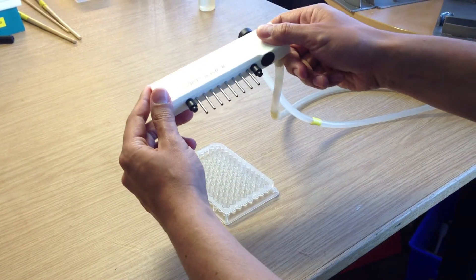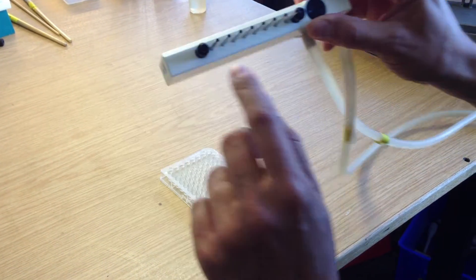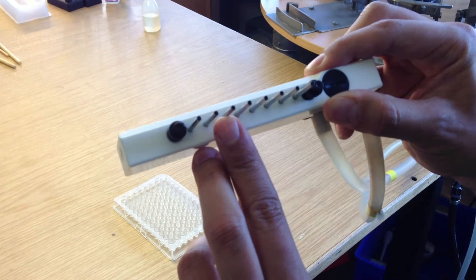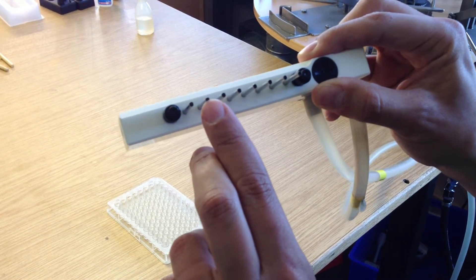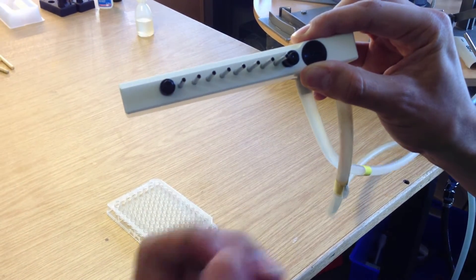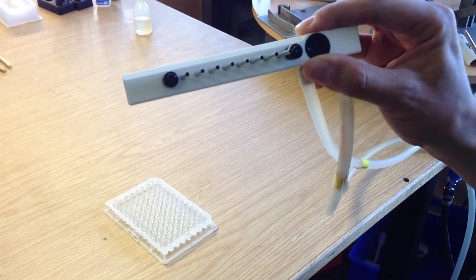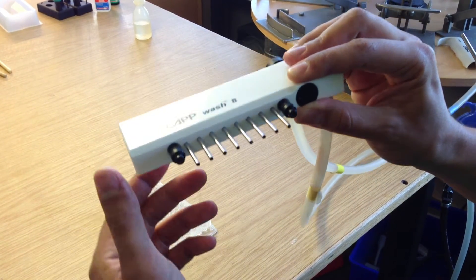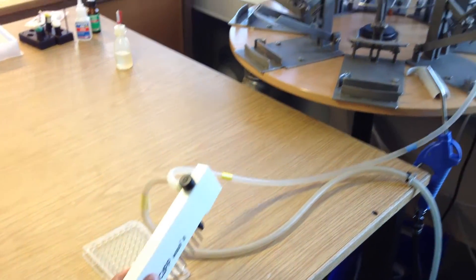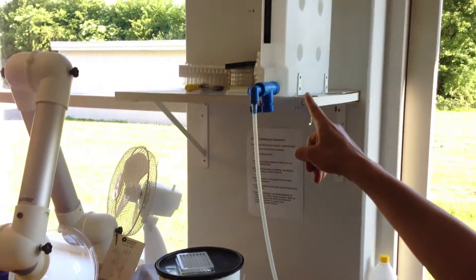Here we have the manifold, and the manifold has a two-in-one needle system where the inner tubing is responsible for dispensing the liquid and the outer tubing is responsible for aspirating the liquid after the washing procedure. Up here we have the bottle for the washing solution.